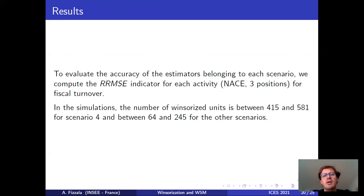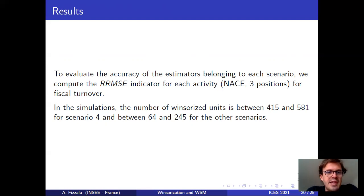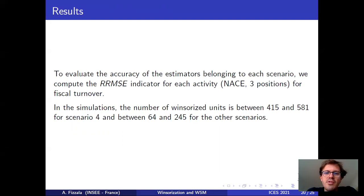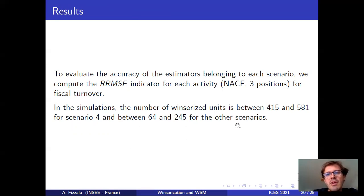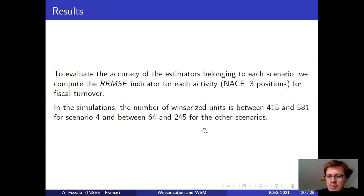Our first result: the number of Winsorized units is between 400 and 600 for scenario four and between 64 and 245 for the other scenarios. Before 2016, the number of Winsorized units would be between 100 and 300, so scenarios one to three are in a similar order of magnitude.